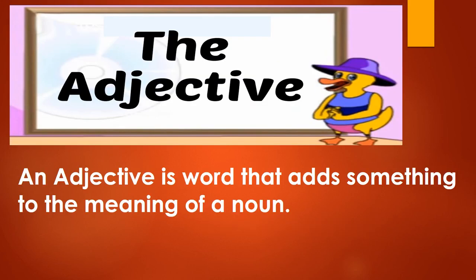Our topic is the adjective. An adjective is a word that adds something to the meaning of a noun. For example: a happy boy, a sad girl, a big elephant, a small mouse, a tall tower, a short film, a new city, an old town. All these words — happy, sad, big, small, tall, short and old — describe nouns.